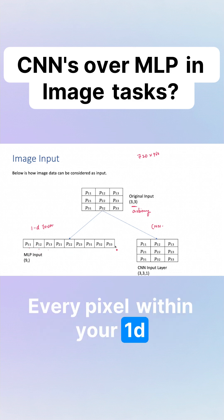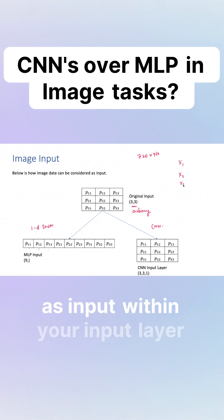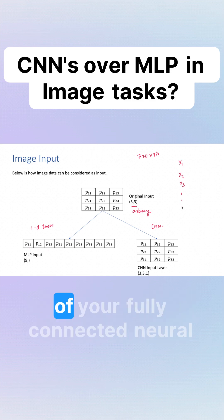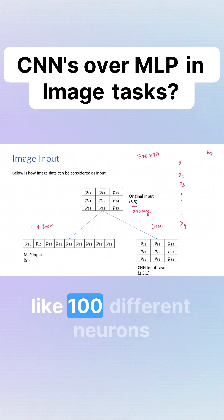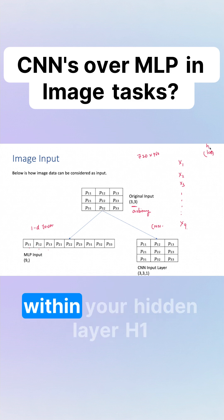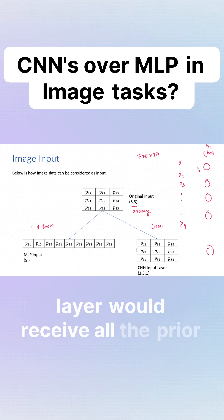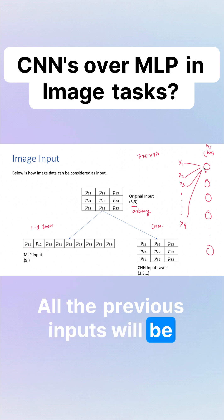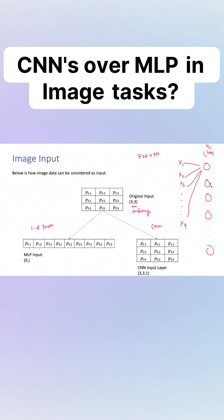Every pixel within your 1D tensor will now be represented as an input within the input layer of your fully connected neural network. There could be like 100 different neurons within your hidden layer H1, and every neuron in the hidden layer would receive all the prior inputs. All the previous inputs will be received for every single neuron in a fully connected neural network.